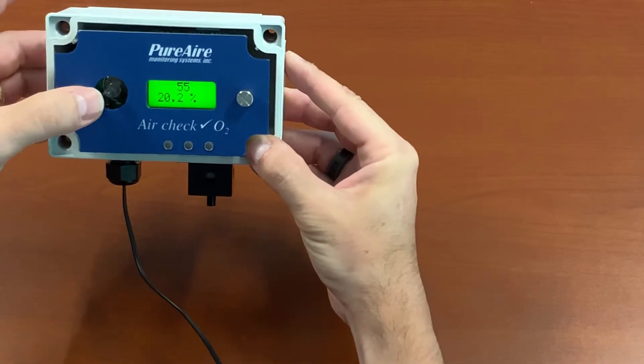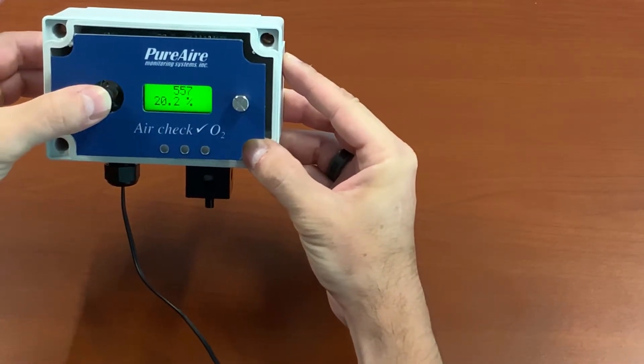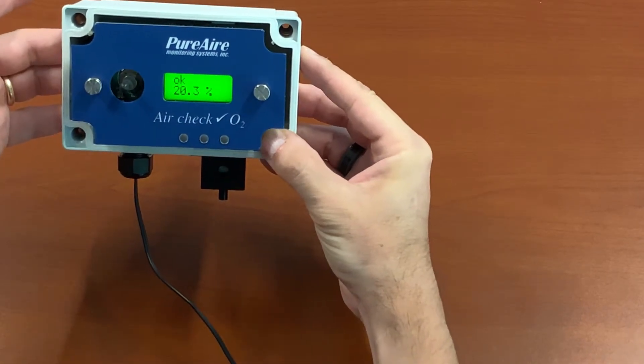Once you get to the seven, you're going to stop and push straight in on the joystick like it's a push button, and you should get passcode OK.